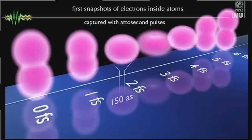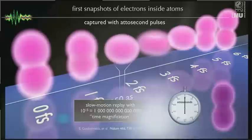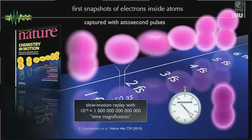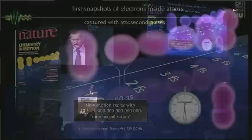Attosecond pulses allow us to take snapshots of electrons moving deep inside atoms, as you can see from this series of pictures. Again, from these snapshots we can reconstruct the motion in slow-motion replay. For this purpose, we had to slow down time — or in the language of microscopy, we had to magnify time — by a factor of 10 to the 15.